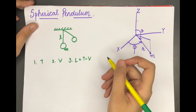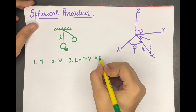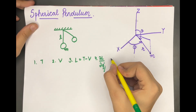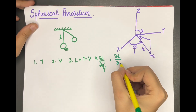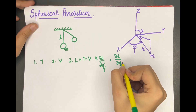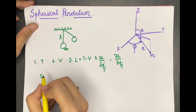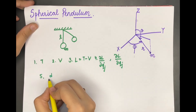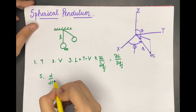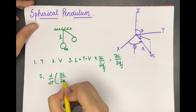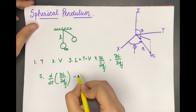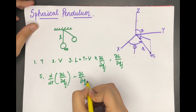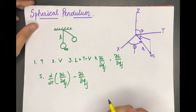The fourth step is to calculate the quantities included in the Lagrangian equation — that is ∂L/∂q̇ⱼ and ∂L/∂qⱼ. The fifth step is to substitute these quantities back into the Euler-Lagrange equation, which is d/dt of (∂L/∂q̇ⱼ) minus ∂L/∂qⱼ, and after solving this we get our equation of motion.